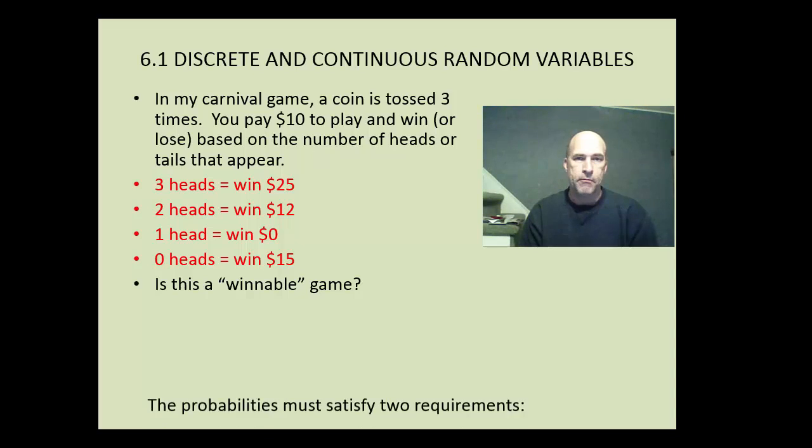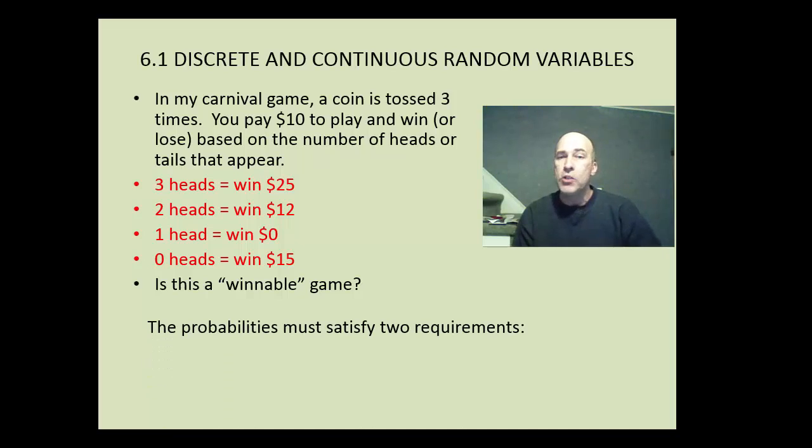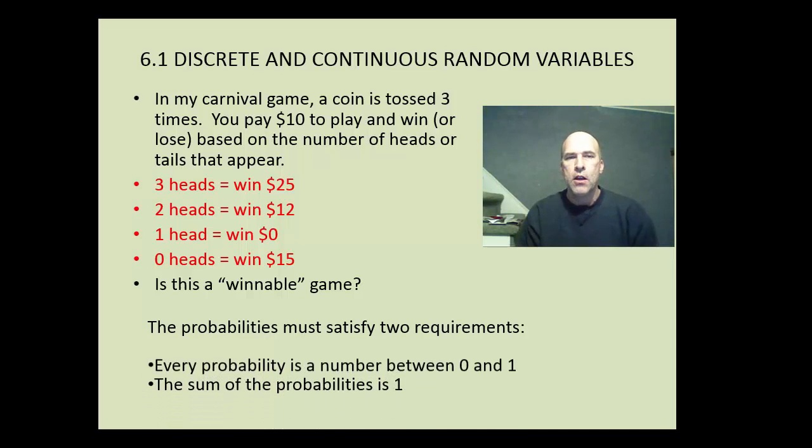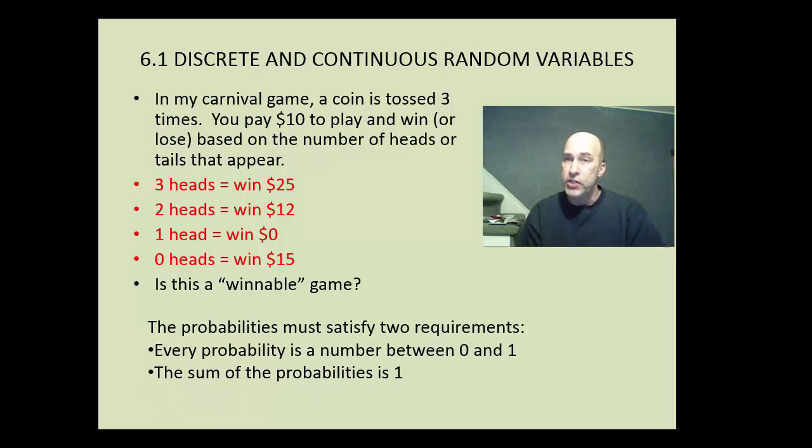So now what we would like to do here is take all this information together and find out, is this game winnable? And first of all, the probabilities we have must satisfy two requirements. Every probability is a number between zero and one, just like we've seen in the past. All of our probabilities are one-eighths or three-eighths. And the sum of the probabilities is one. And you can verify that one-eighth, three-eighths, three-eighths, and one-eighth all add up to one.